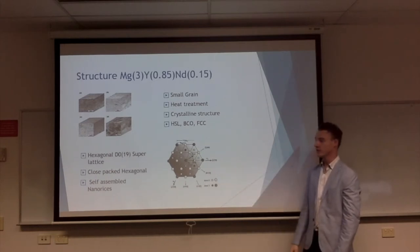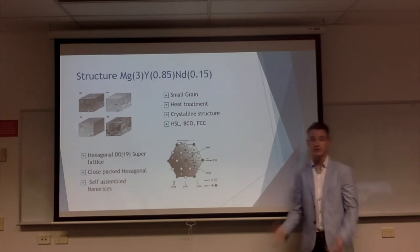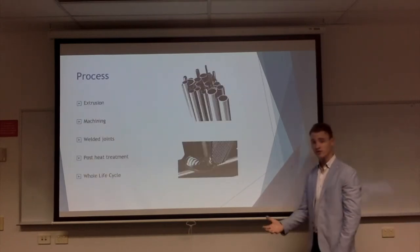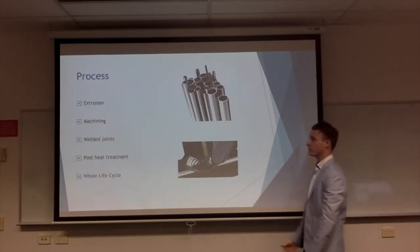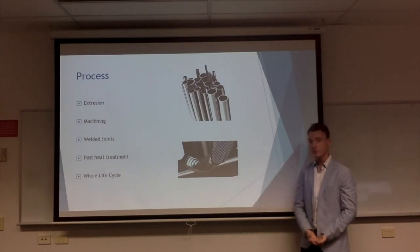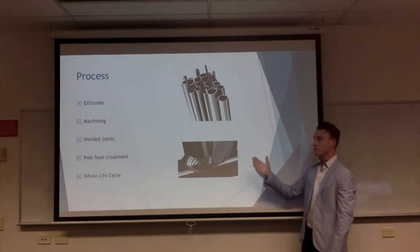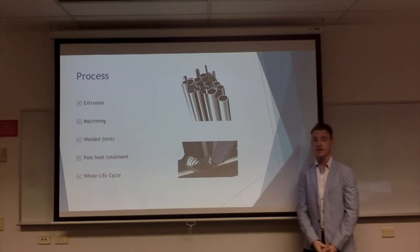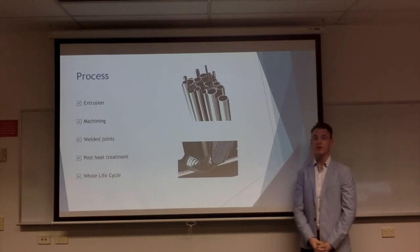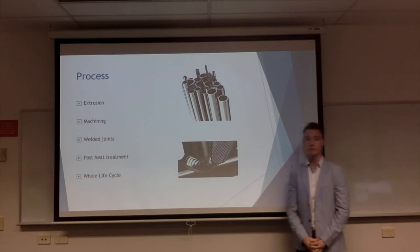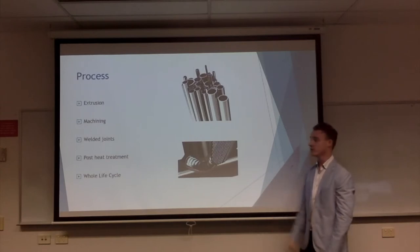A key feature is the heat treatment: at 150 degrees Celsius for 500 minutes, it gives a small grain structure and produces a hexagonal superlattice, as you can see here, which is very closely packed atoms. The process that Electron 43 goes through is an extrusion process, followed by this heat treatment. It is then machined — noting that magnesium shavings are extremely flammable, so extra safety precautions need to be in place.